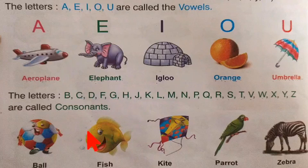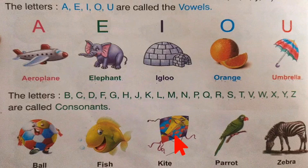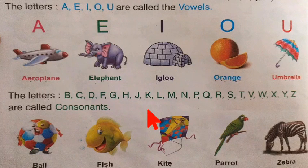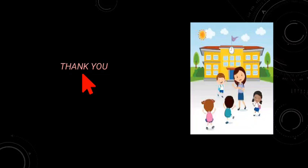See here — some examples. B for ball. F for fish. K for kite. P for parrot. Z for zebra. The alphabet is divided into two types: first one vowels, and second one consonants. Do you understand? Okay, dear children, thank you.